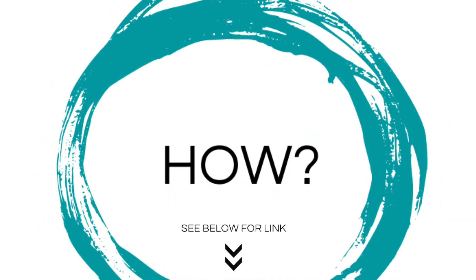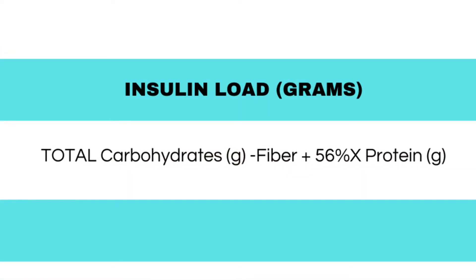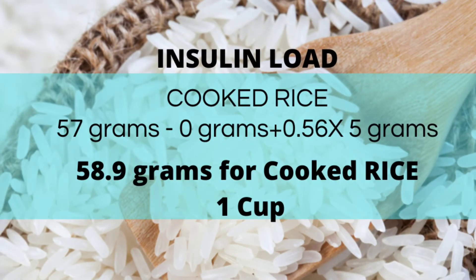An article I link in the description clearly explains the insulin index. Carbohydrates have a large impact on insulin — that's a given — but the article also states that protein intake can incite an insulin response. The article gives the following equation: Insulin Load = (Carbohydrates − Fiber) + (56% of Protein), with the unit in grams. For example, one cup of cooked rice at 200 grams has 57g of carbs, 0g fiber, and 5g of protein. So the insulin load is 57 − 0 + (0.56 × 5) = 59.8 grams.